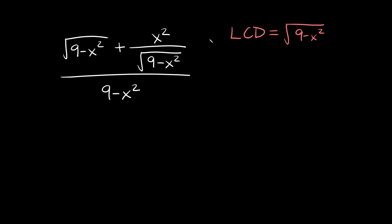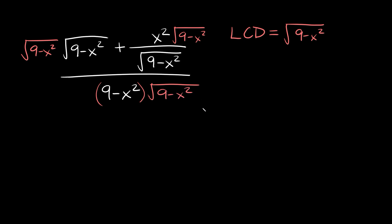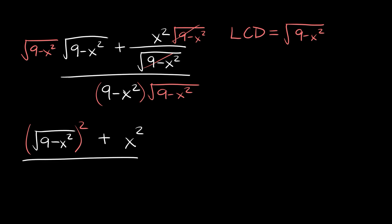Step 2 is multiplying everything by the LCD, so we multiply this first term by the square root of 9 minus x squared, we multiply this top term by the square root of 9 minus x squared, and we multiply the bottom by the square root of 9 minus x squared. On top we have the square root of 9 minus x squared multiplied twice, so we're squaring it, and then we add x squared — since the square root of 9 minus x squared cancels on top and bottom, we're left with x squared there. The denominator becomes 9 minus x squared times the square root of 9 minus x squared.